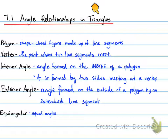A triangle is a special type of polygon — specifically, it is a three-sided polygon. It has three angles with three sides.